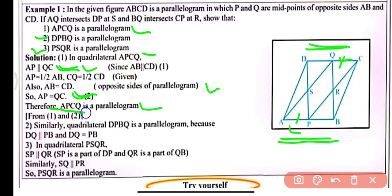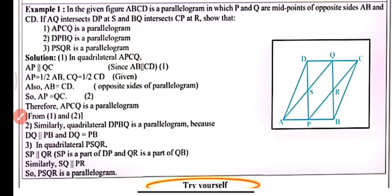Similarly, in quadrilateral DPBQ, DP is parallel to PB and DQ equals PB, therefore DPBQ is also a parallelogram.